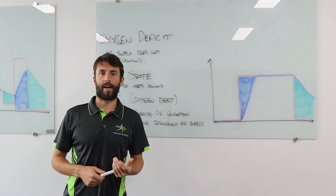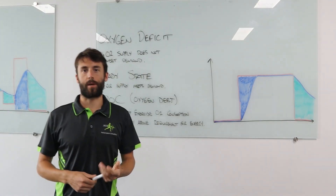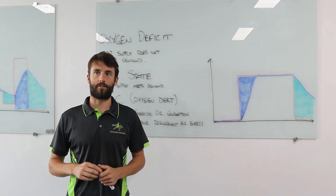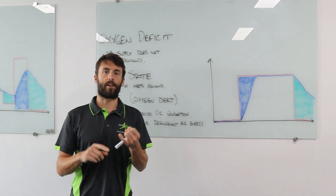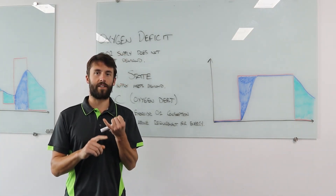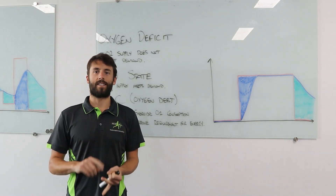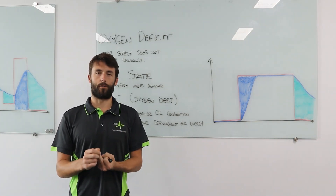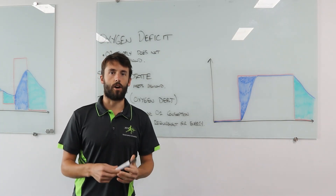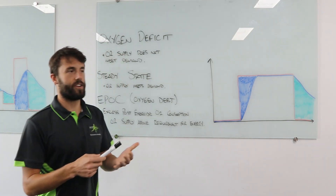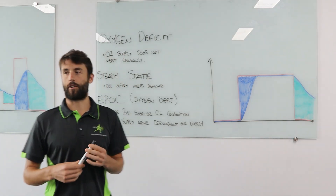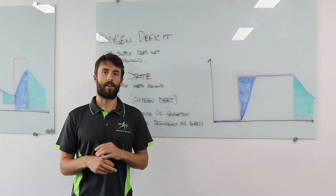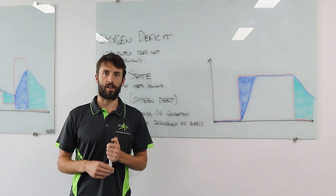G'day guys, Tyler here. Welcome back to the METS lab as we continue to go through the key knowledge for Unit 3 Area Study 2. Today we're going to talk about three terms that you really need to know: Oxygen Deficit, Steady State, and EPOC, which you may also see as Oxygen Debt. We're going to go through the definitions, look at a graph, and then look at a couple of applications in different sporting scenarios.